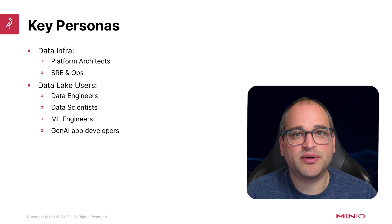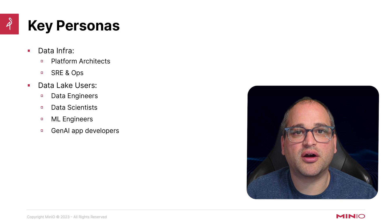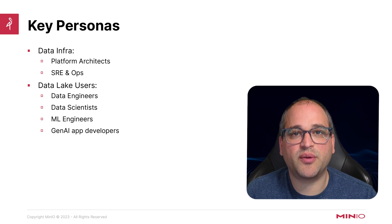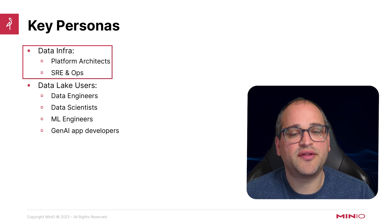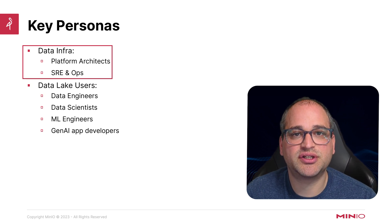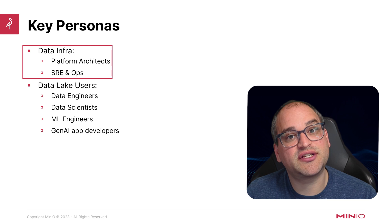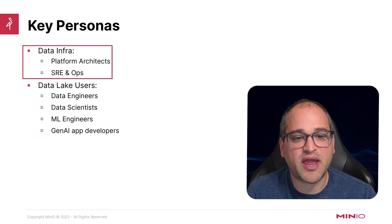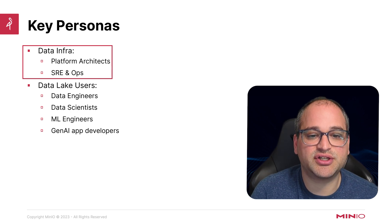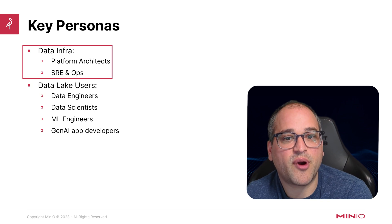A little bit about the key personas and who this session is for. We break our personas into two buckets. First, we have data infrastructure folks — people who are charged with setting up the data infrastructure within an organization. They often have to make architectural decisions, ensure those decisions are defensible and sound, and ensure they can scale with the company as it grows. Titles will vary, but they often include Site Reliability Engineer, DevOps Engineer, or Data Platform Architect.